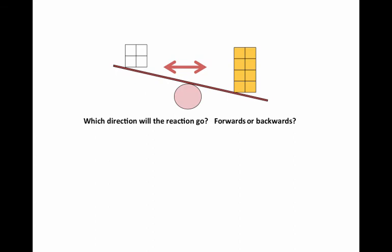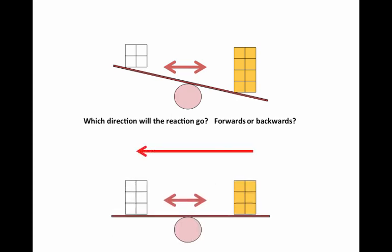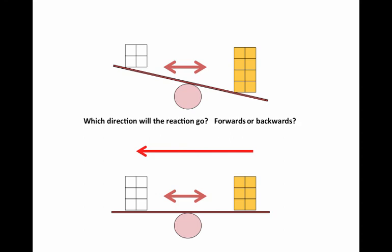If you said the reaction needed to go backwards then you would be correct. In order to restore equilibrium and have an equal concentration of substrates and products we would need to convert some of this product back into substrate again for both sides to once again be equal.